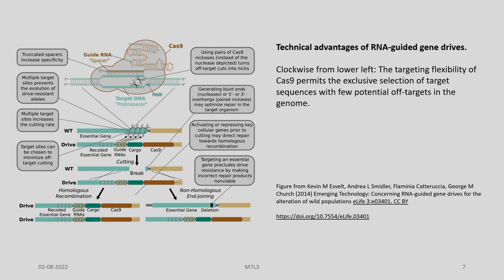We have certain technical advantages of RNA-guided gene drives. Target sites can be chosen to minimize off-target cutting. We can have multiple target sites which increases the cutting rate. Multiple target sites also prevent the evolution of drive resistance alleles. Truncated spacers increase specificity. Using pairs of Cas9 nickase instead of the nuclease turns off-target cuts into nicks. Generating blunt ends or 5-prime or 3-prime overhangs may optimize repair in the target organism. Activating or repressing key cellular genes prior to cutting may direct repair towards homologous recombination.